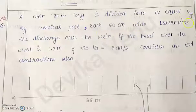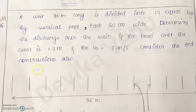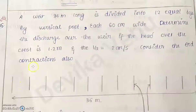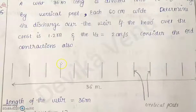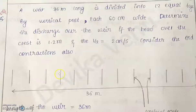The weir is divided into 12 equal bays. For 12 bays, the number of vertical posts required is 11. Each post is 60 centimeters (0.6 meters) wide. The total length is 36 meters, and we need to deduct the width of all vertical posts to get the effective length through which water is flowing.